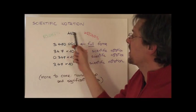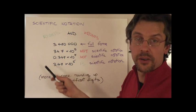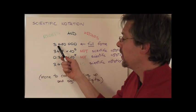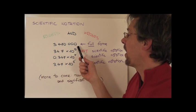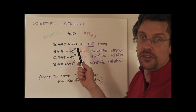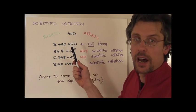So let's see some rights and wrongs, just to set the record straight. Let's imagine a number, 3,470,000. This is what we call the full form. So this is the opposite of scientific notation.